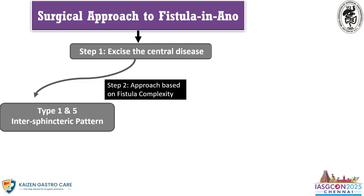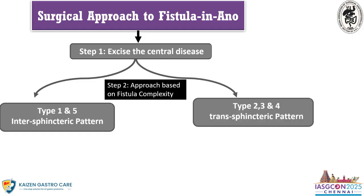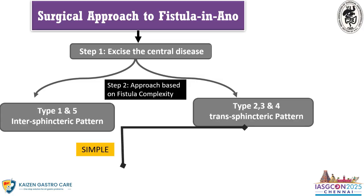We do the proximal intersphincteric fistulectomy — excision of the fistula track along with the internal opening in the intersphincteric plane, ensuring 5mm margin. This is essentially the modified Parks technique. It takes care of 70 to 75% of patients with no recurrence. We propose everyone should do this first. We advocate buzzing the intersphincteric space because glandular components may spread there. Once central disease excision is done, then think about the fistula approach by type. Type 1 is low intersphincteric — already completed. Type 5 is high intersphincteric — just extend and open the intersphincteric space.